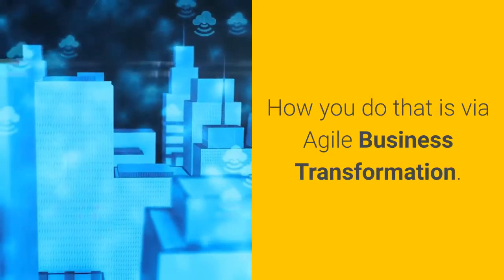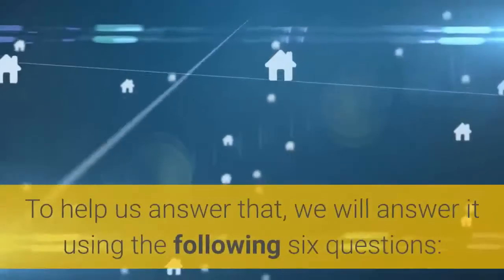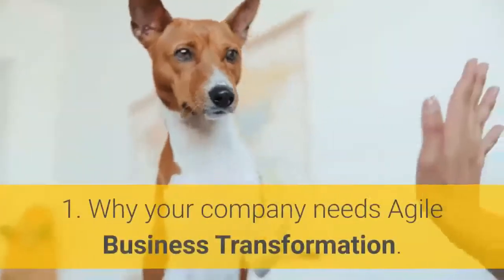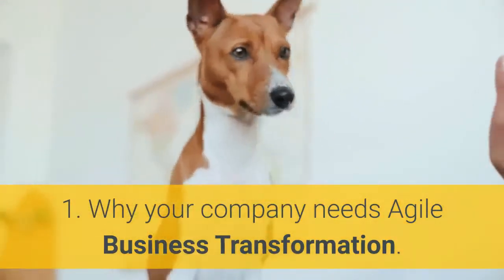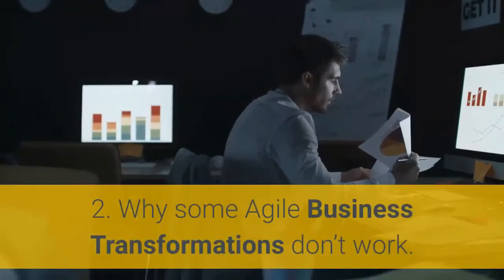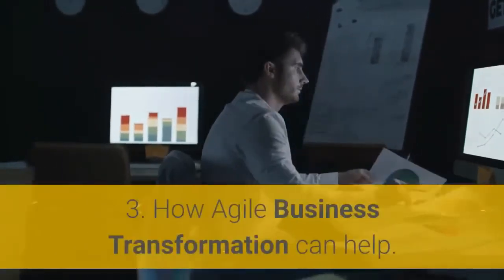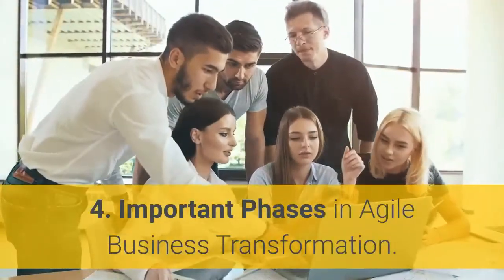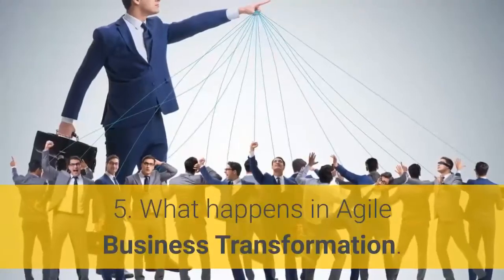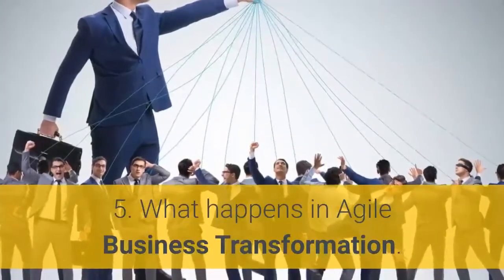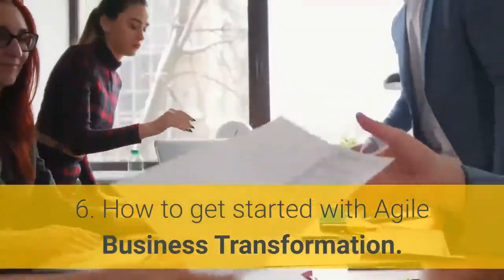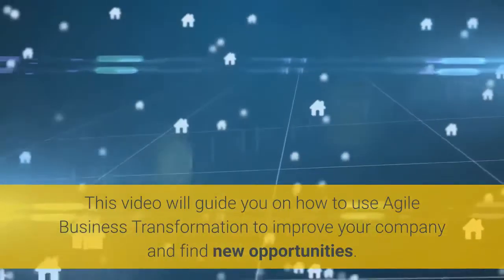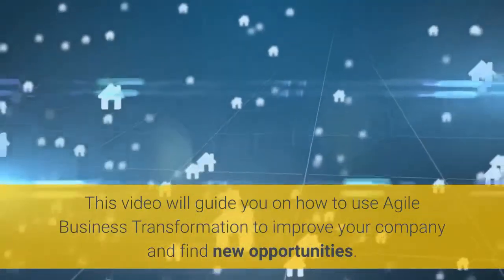How you do that is via agile business transformation. To help us answer that, we will answer it using the following six questions: 1. Why your company needs agile business transformation. 2. Why some agile business transformations don't work. 3. How agile business transformation can help. 4. Important phases in agile business transformation. 5. What happens in agile business transformation. 6. How to get started with agile business transformation. This video will guide you on how to use agile business transformation to improve your company and find new opportunities.